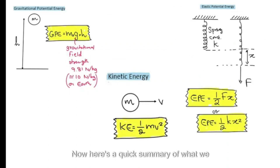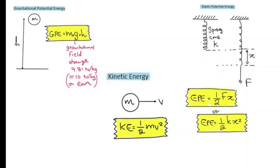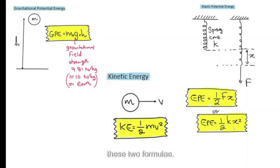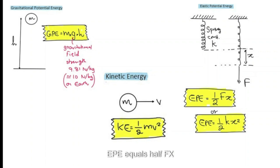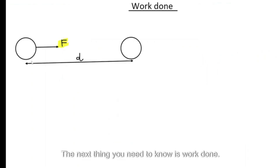Here's a quick summary: GPE = mgh; kinetic energy = ½mv²; elastic potential energy = ½fx or ½kx². The next thing you need to know is work done.